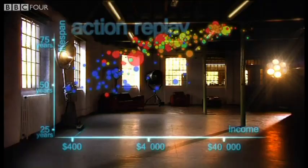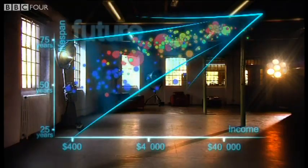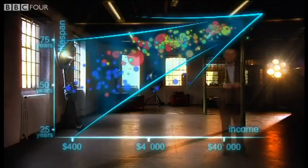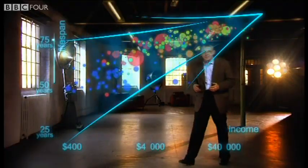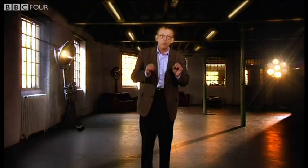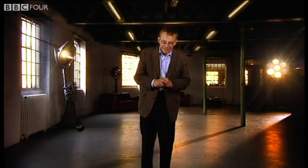And I see a clear trend into the future. With aid, trade, green technology, and peace, it's fully possible that everyone can make it to the healthy, wealthy corner. What you have seen in the last few minutes is a story of 200 countries shown over 200 years and beyond. It involved plotting of 120,000 numbers. Pretty neat, eh?